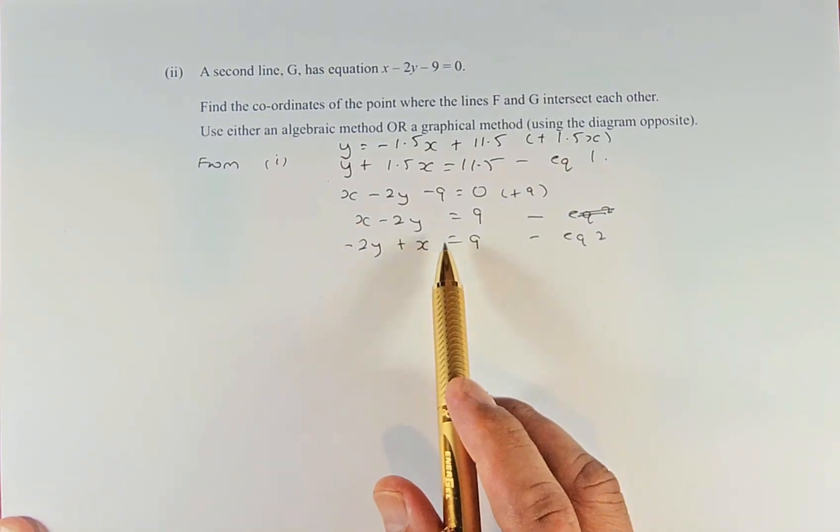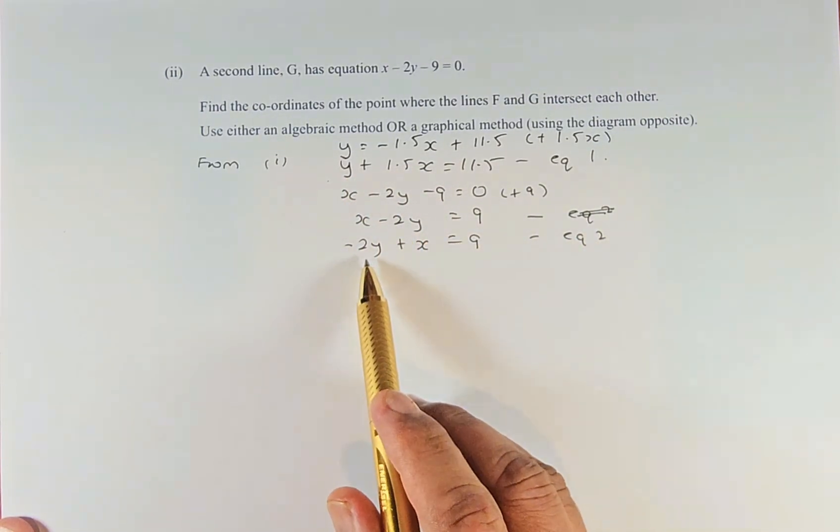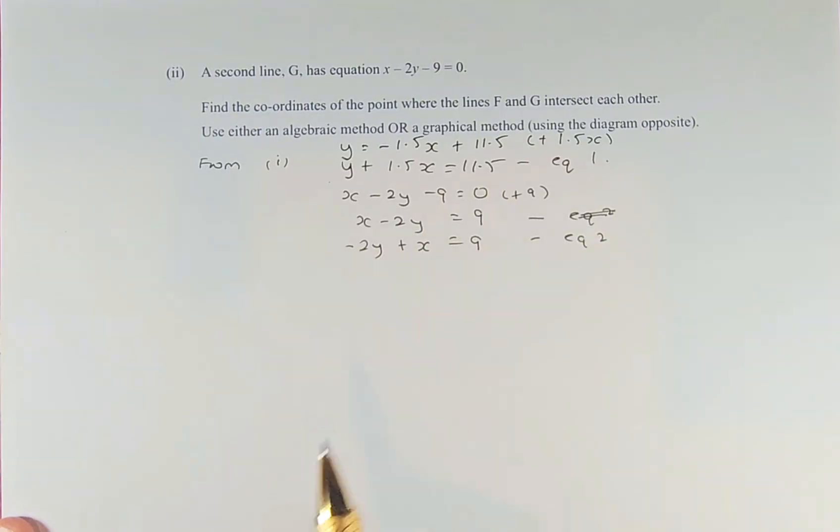Now we simplify equation 2. We want the same form, so we rearrange it: -2y + x = 9. That becomes equation 2.